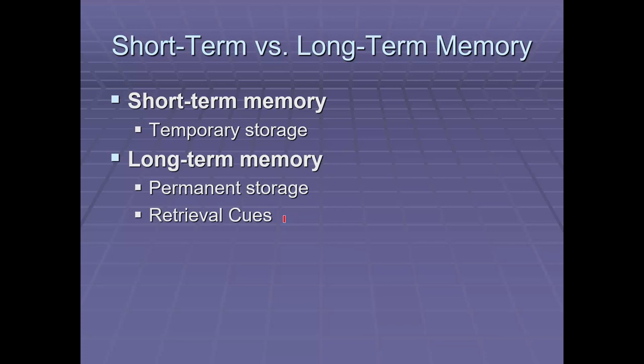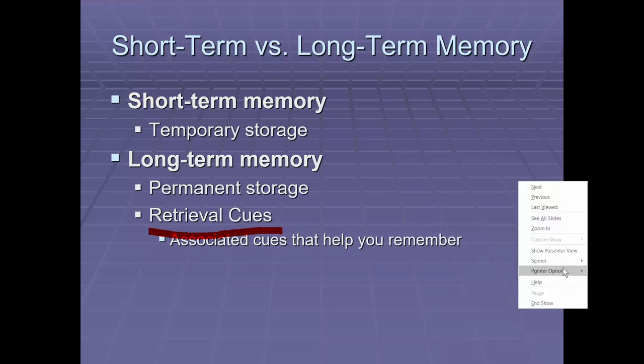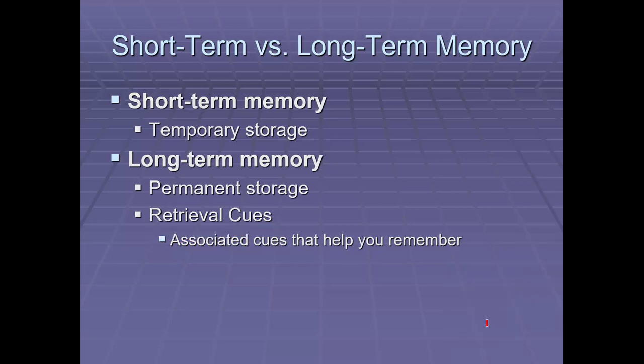A very important aspect of memory is retrieval cues. Basically they are associated cues that help you remember things. It turns out that these are very important to explaining how memory works. They are like little memory triggers, and they often draw up memories. For example, if you've ever been listening to music and you hear a song you haven't heard in a long time and you start remembering things surrounding when you first heard that song, that song is now a retrieval cue. It triggers those memories of what you experienced when you first heard that song.